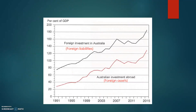One way to demonstrate how this looks is to look at the graph in your textbook. The black line represents foreign liabilities — labelled as foreign investment in Australia — which is the total amount of foreign investment in Australia over time. You can see that foreign liabilities have grown since 1991, from around 75% of GDP to almost 190% of GDP. The red line represents foreign assets, which is the accumulation of Australian investment abroad over time. Foreign assets have increased from about 30% of GDP to around 130% of GDP in 2015.